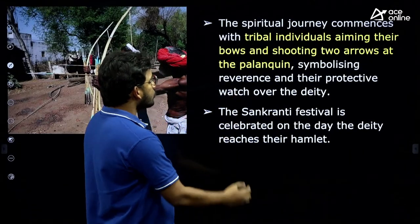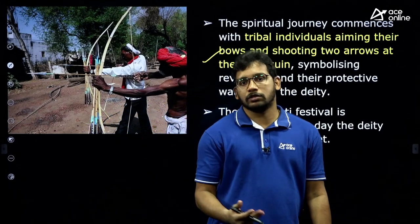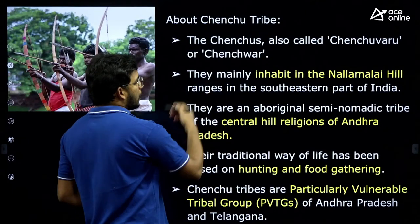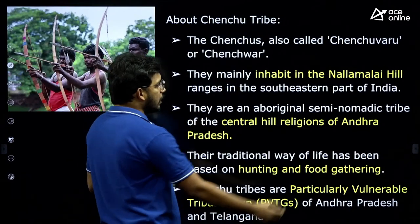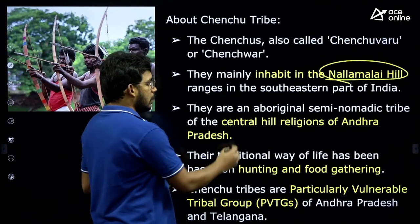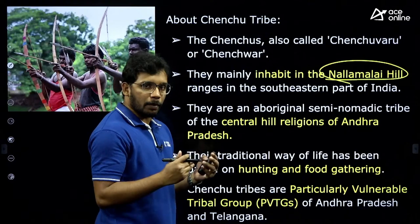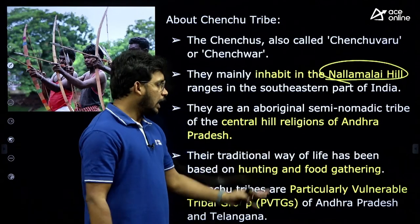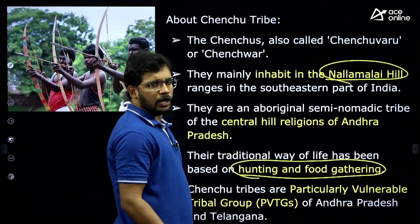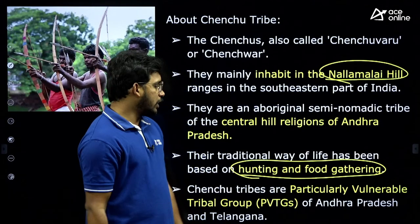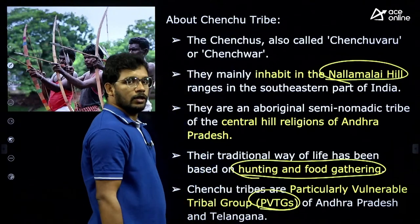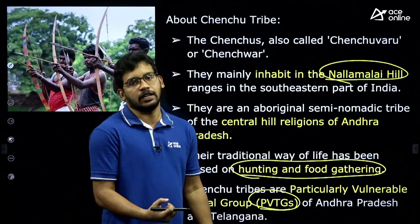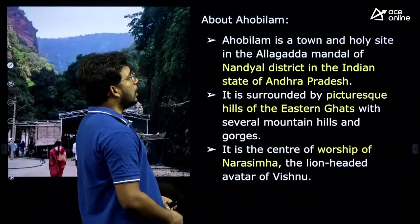The festival is mainly attributed to the Chenchu tribes. The god is taken to all the hamlets where Chenchu tribes reside. They virtually protect the surroundings — throwing arrows in an act — to protect the deity from demons. Chenchu tribes are inhabited in the Nallamala Hills in Andhra Pradesh and Telangana region. They are semi-nomadic, moving from one place to another, originating from Andhra Pradesh. They mainly depend on hunting and food gathering rather than agriculture.